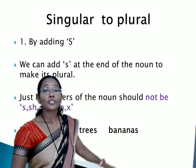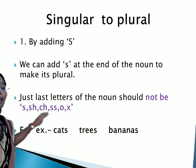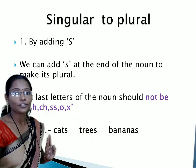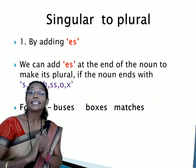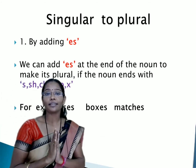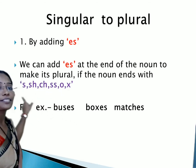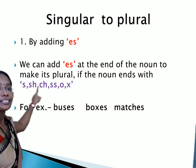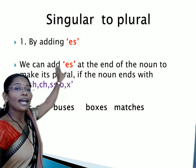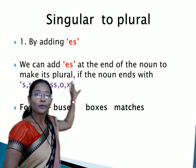So let us see if the noun ends with these letters, then what to do for it. For that we need to follow the second rule. We can add ES there — meaning, by adding ES we can make the plural of those nouns. Which nouns? Those nouns which end with S, sh, ch, double S, O, or X. We can add ES at the end of the noun to make its plural.